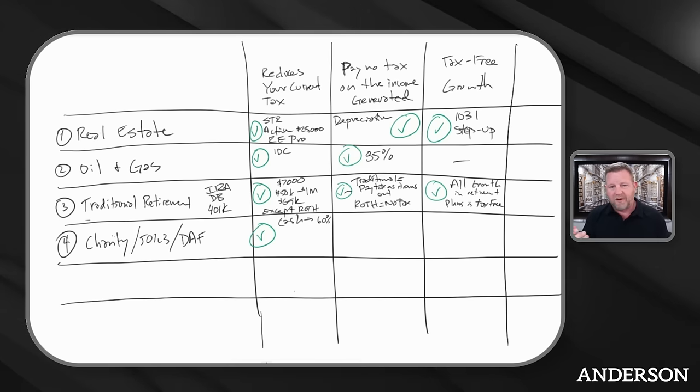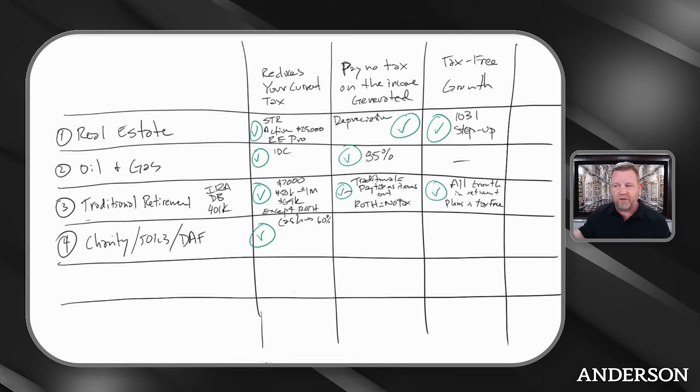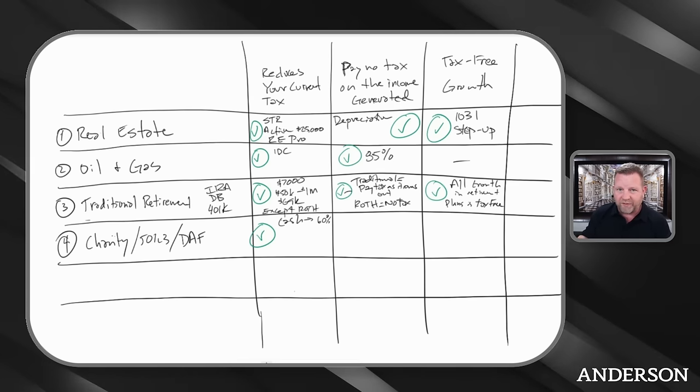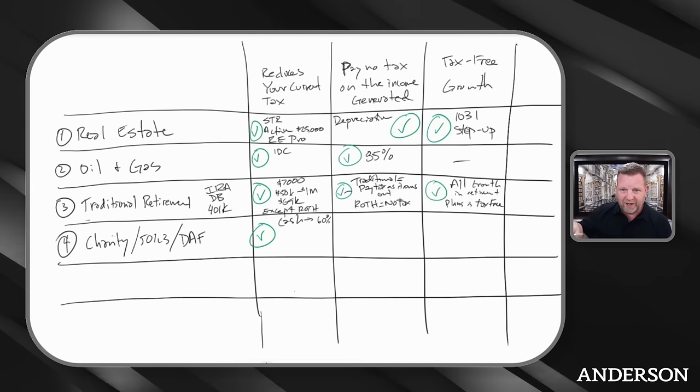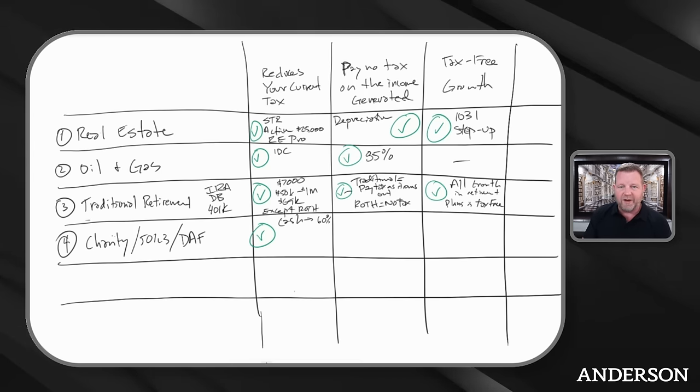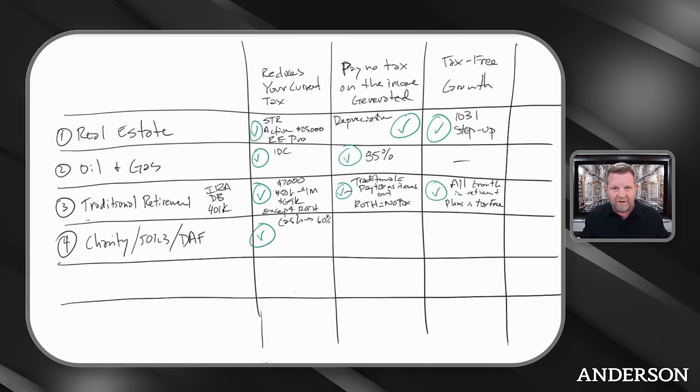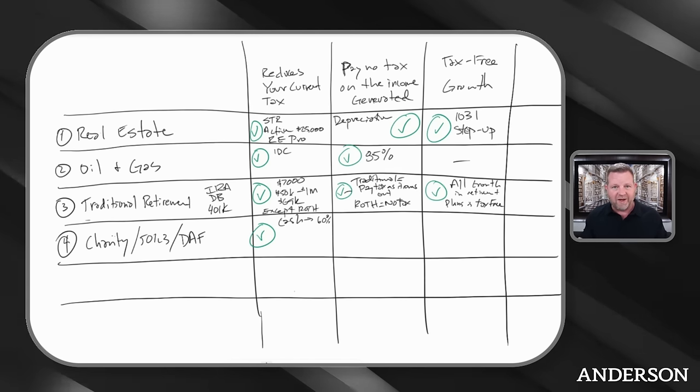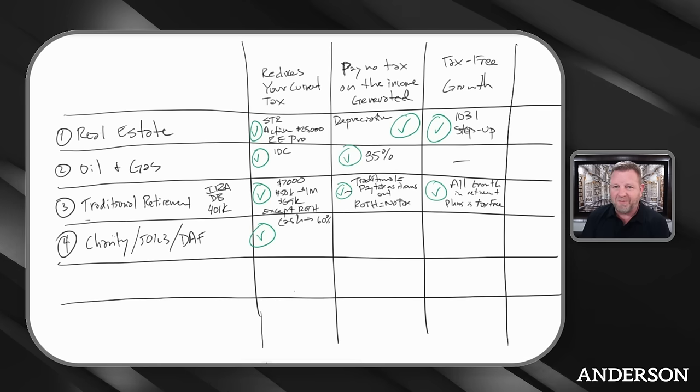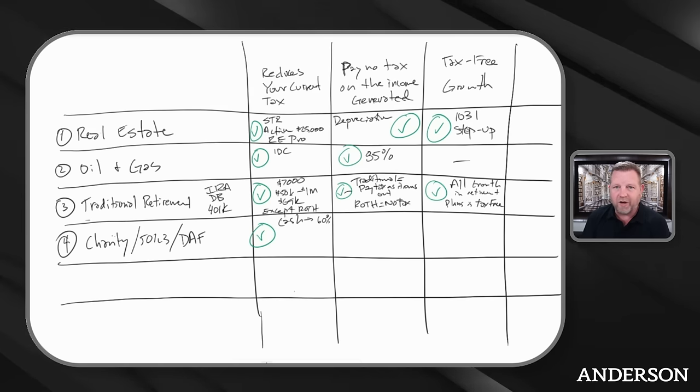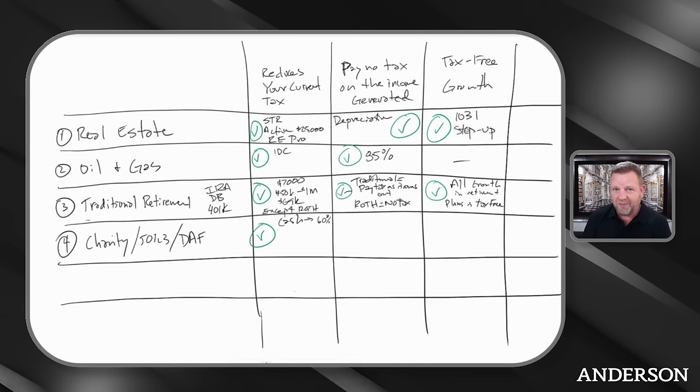Put it in a donor advised fund. You just manage the money and let it grow, grow, grow, and eventually it's going to go to a 501c3. Those investments compound tax-free, you never pay tax on them if they're in the charity. There's great examples, the Hershey Charitable Fund, that thing's worth like $13 billion now, set it up in 1905.